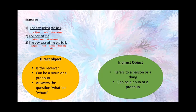Let's see the second sentence: The boy hit me. The boy is the subject. Hit is an action word — a verb. Me is an object. Similar to the first sentence, this also is a direct object, because it is affected by the subject's action. Always remember: a direct object is the receiver of the action. It can be a noun or a pronoun, and it answers the question what or whom.